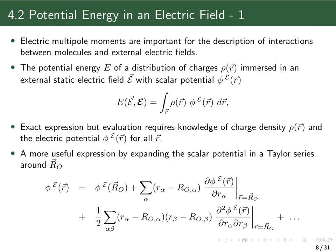Let's look at the potential energy E of a charge distribution — meaning the positive and negative charges in our molecule — which is immersed in an external static electric field. As introduced in chapter two of the book, we describe the electric field by its scalar potential. The expression for the energy of a charge distribution in the presence of a scalar potential involves an integral over all space, because we have a continuous charge distribution with charge density rho, not individual discrete charges.